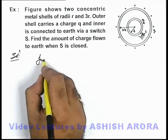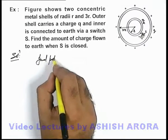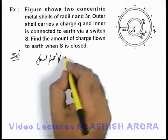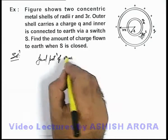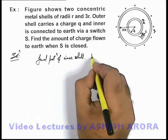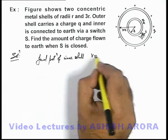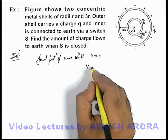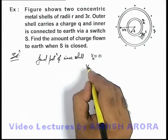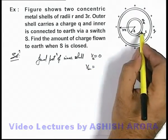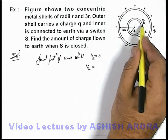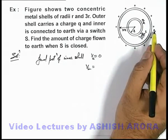After closing the switch, the final potential of the inner shell can be directly written as V equals zero. The potential of the inner shell can be written due to two charges: one supplied by the earth and the other on the outer shell.